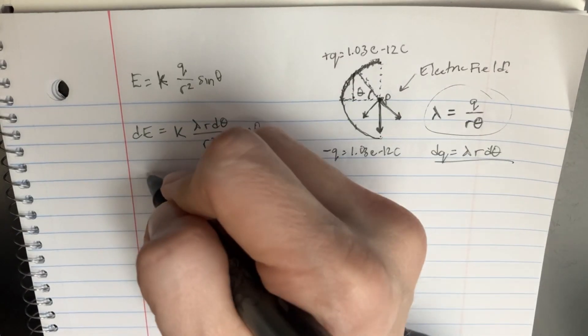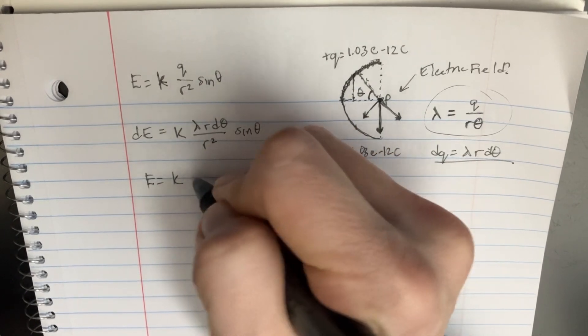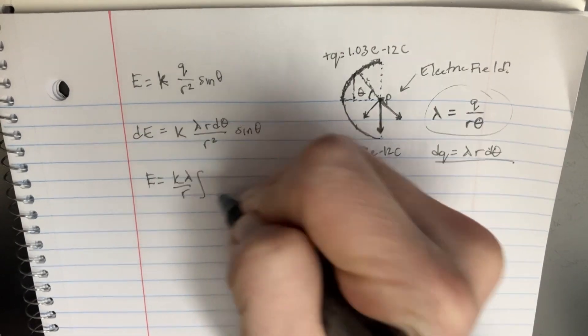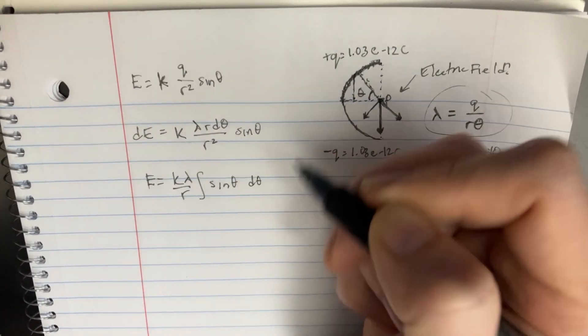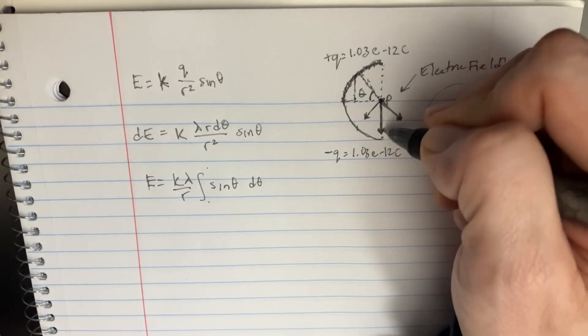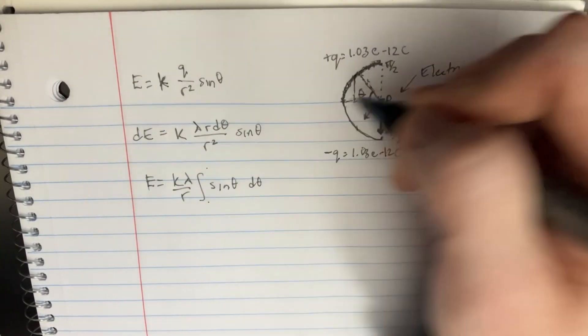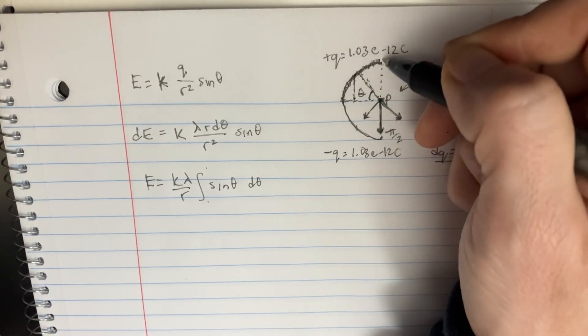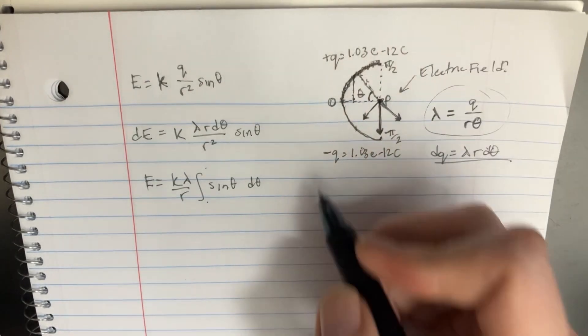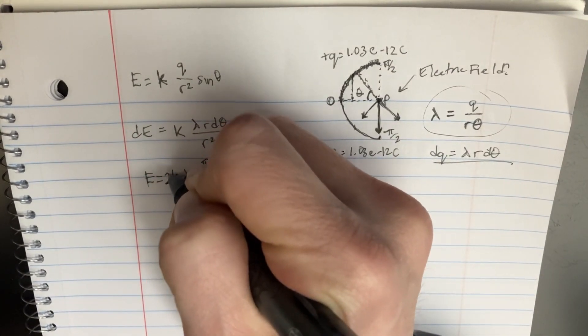Now we can try to simplify this and set up for the integral, because we would have E equals K, and then we have lambda over R, and then we have the integral of sine theta d theta. Now where's our limits of integration? Well, technically we're going from negative pi over two over here to pi over two. But we know that if we have something that's negative pi over two to pi over two, we can also just say zero to pi over two and multiply that by two.